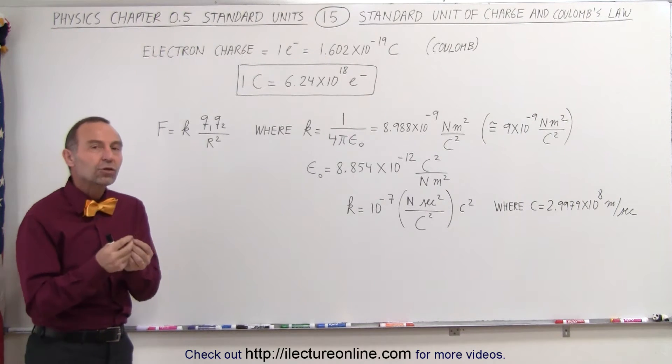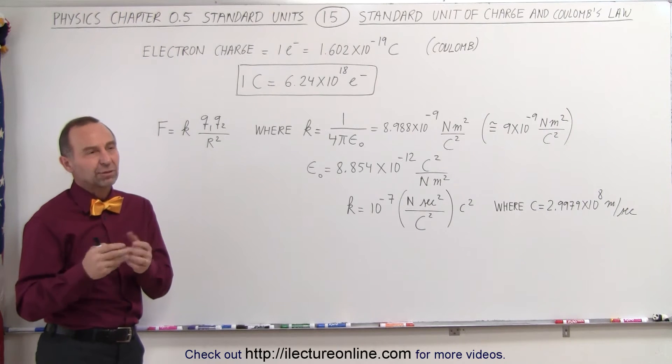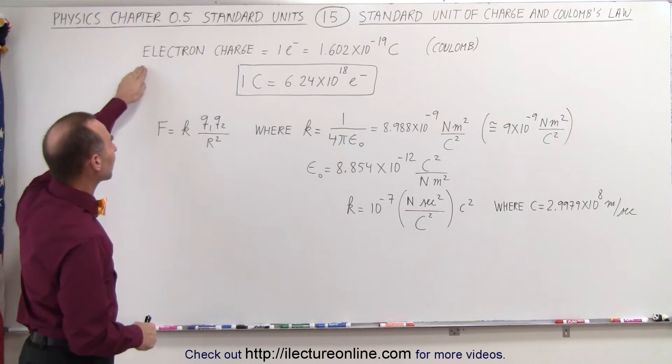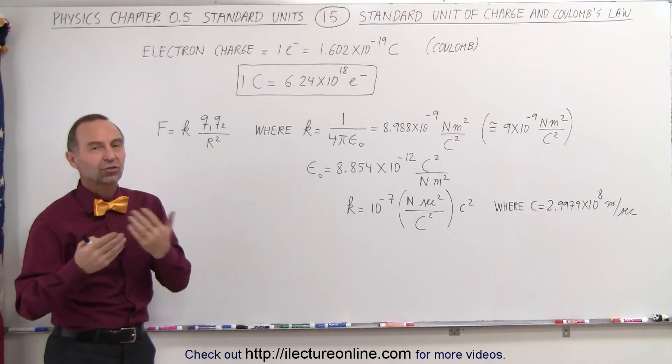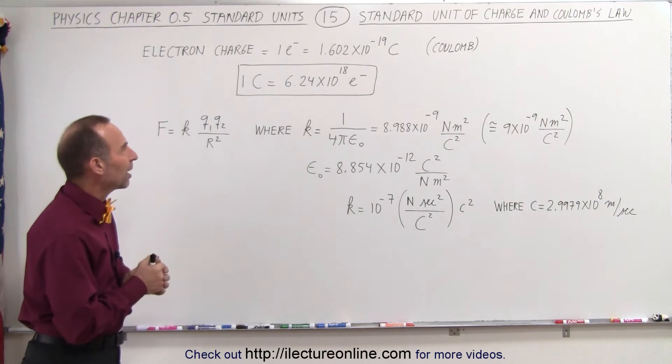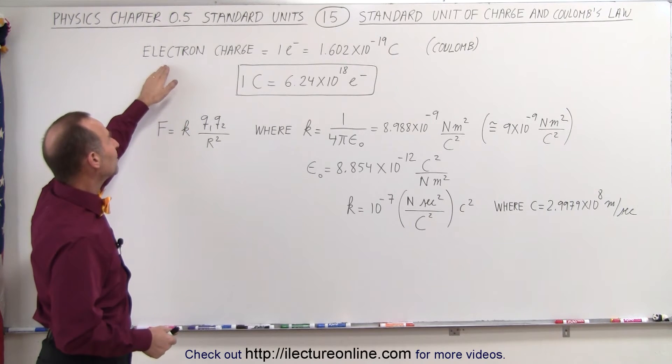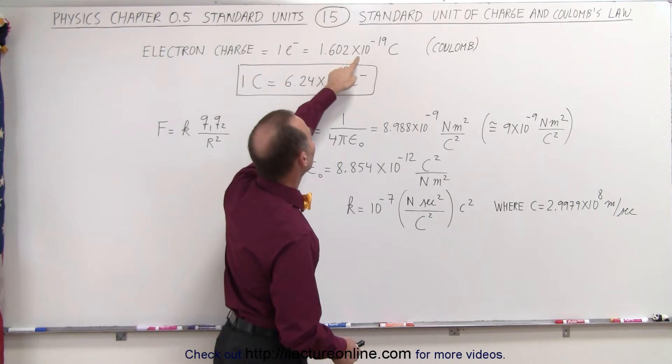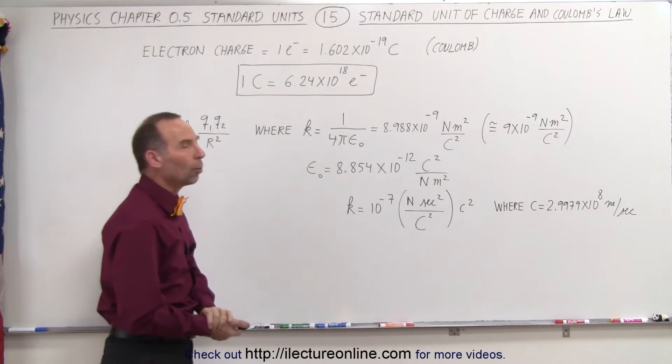The smallest unit of charge that we have in nature, if you disregard quarks for a moment, is the charge of an electron, which is the same as the charge of a proton. They're just different - one is negative and the other one is positive. The magnitude of electron charge is equal to 1.602 times 10 to the minus 19 coulombs.